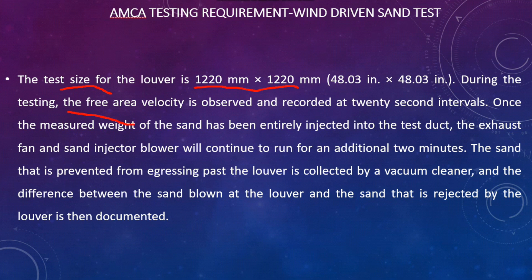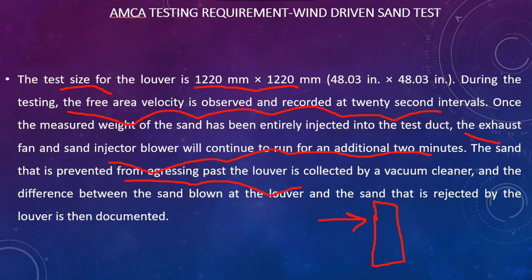During the testing, the free area velocity is observed and recorded at every 20-second interval. The test blows a measured amount of sand — for example, 5 grams — onto the louver using an exhaust fan and sand-injected blower, running continuously for 2 minutes. The sand prevented from passing through the louver is collected by a vacuum cleaner. The difference between the sand injected and the sand that passed through is measured, and based on that the sand rejection performance is determined. There are four grades: Class A is 90–100% effective, Class B is 80–89.9%, Class C is 70–79.9%, and anything below 70% falls into Class D.